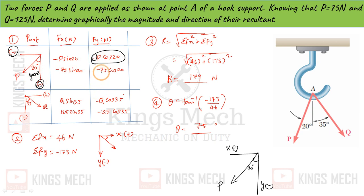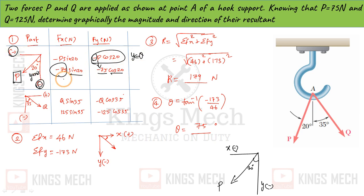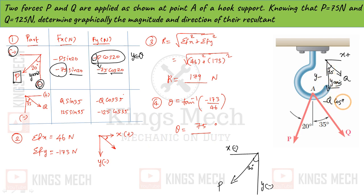Since the direction is negative, I am using the magnitude as negative. P equals 75, so the y-component is minus 75 cos 20, and the x-axis component is negative. For Q, with 35 degrees with respect to the y-axis, the component is minus Q cos 35.